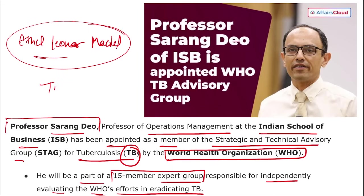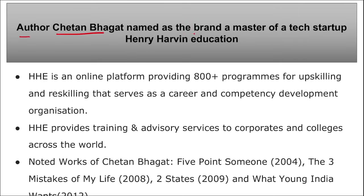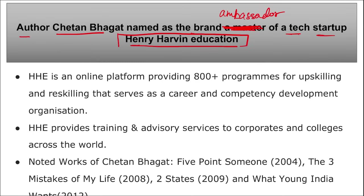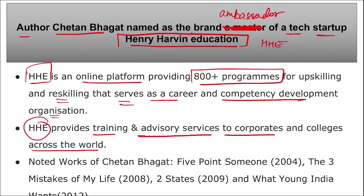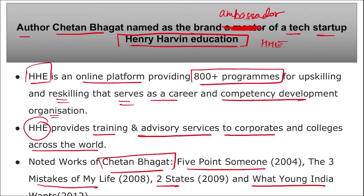Author Chetan Bhagat has been named as the brand ambassador of a tech startup — Henry Harwin Education (HHE). This is an online platform providing 800+ programs for upskilling and reskilling, serving as a career and competency development organization providing training and advisory services to corporates and colleges across the world. Notable works of Chetan Bhagat include Five Point Someone, The Three Mistakes of My Life, Two States, and What Young India Wants. Henry Harwin Education's founder and CEO is Kunal Gupta, headquartered in Noida, UP.